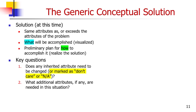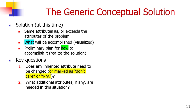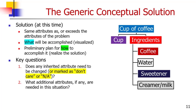The key questions are: does any inherited attribute need to be changed or marked as don't care or not applicable? And what additional attributes, if any, are needed in this situation? So here's the generic conceptual solution. A cup of coffee contains a cup of ingredients: coffee, water, sweetener, creamer or milk. This is the what. But in our case, we already know some of those hows. For example, the coffee is brewed and the sweetener is sugar. So we have that information and we modify the template accordingly.